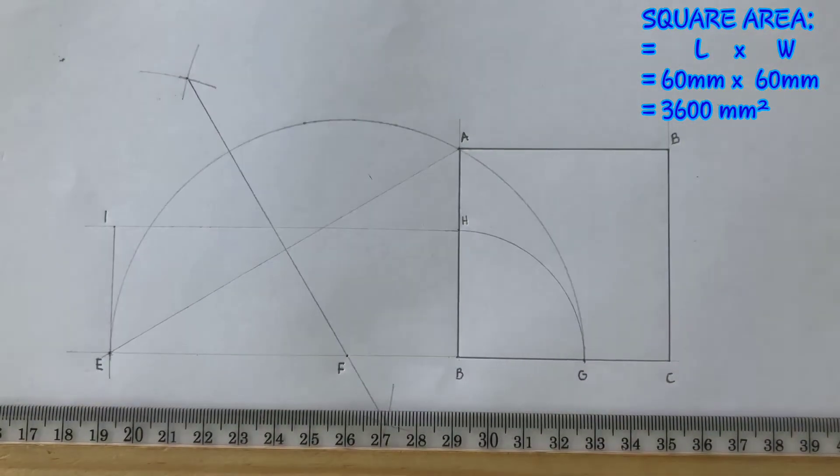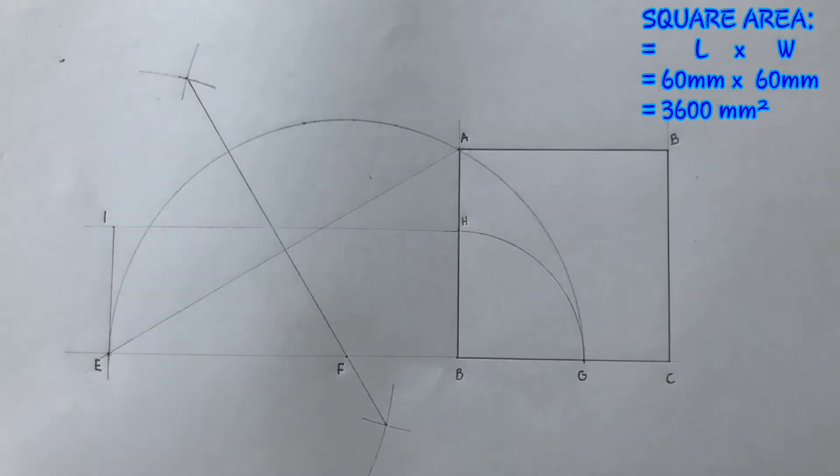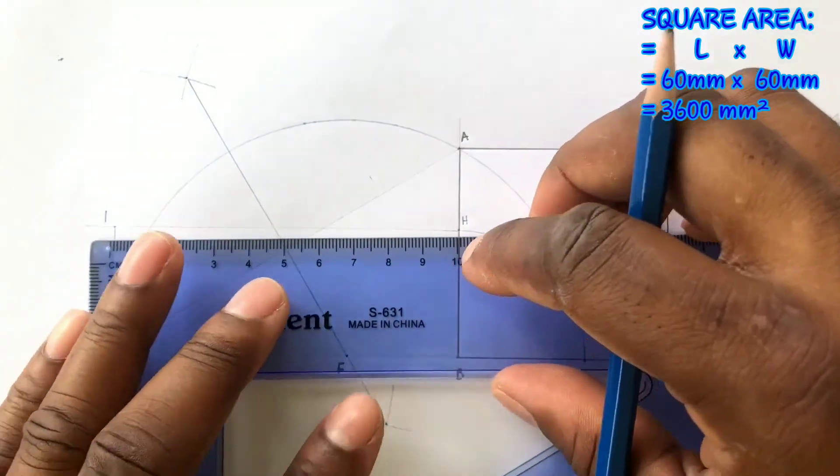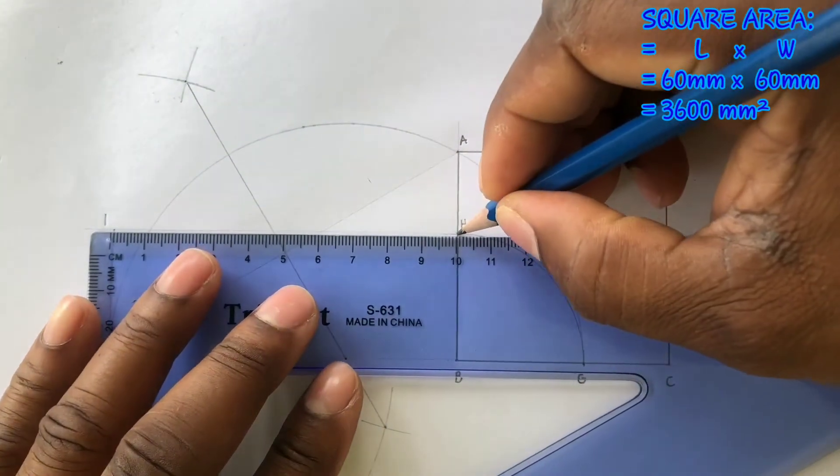Now IEBH is your required rectangle. Outline your required rectangle.